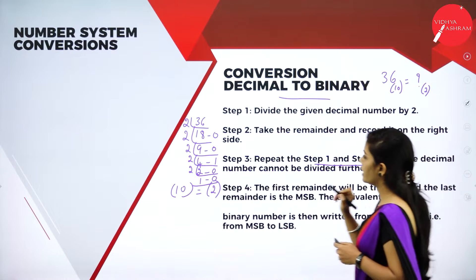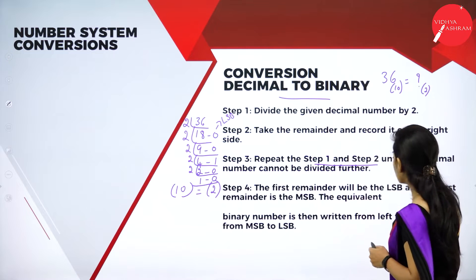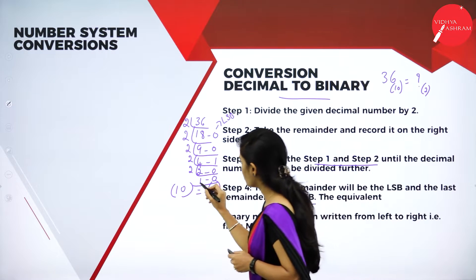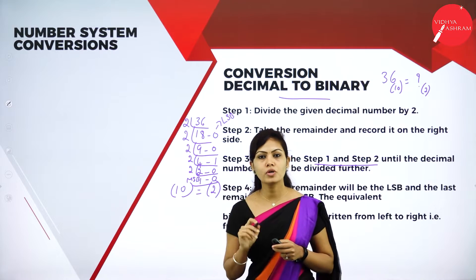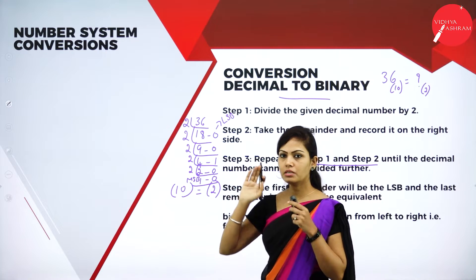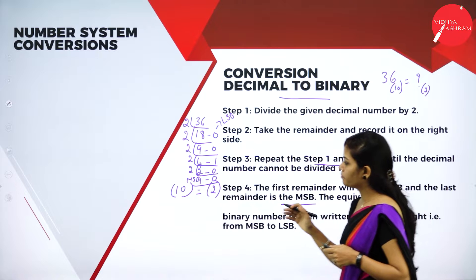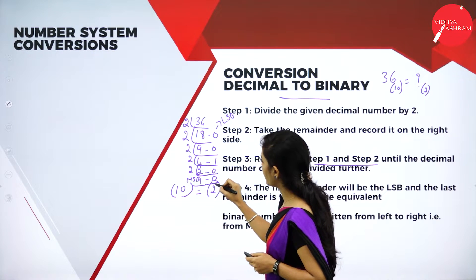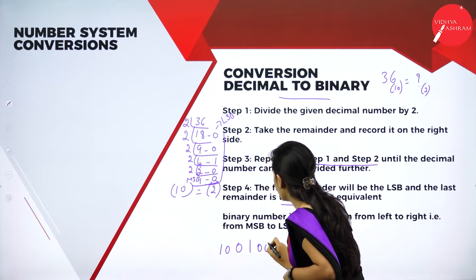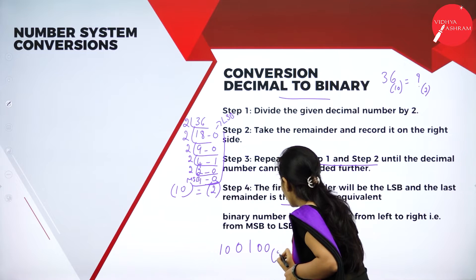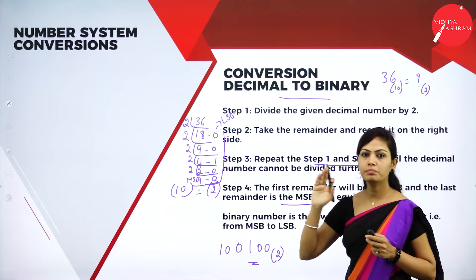The first remainder will be the LSB — least significant bit — and the last remainder is the MSB — most significant bit. The last remainder is 1, which is the MSB. The binary number is written from left to right, that is from MSB to LSB. So the final answer for 36 is 100100100 to the base 2. This is your conversion value — very simple logic. Use these steps to easily find decimal to binary conversion.